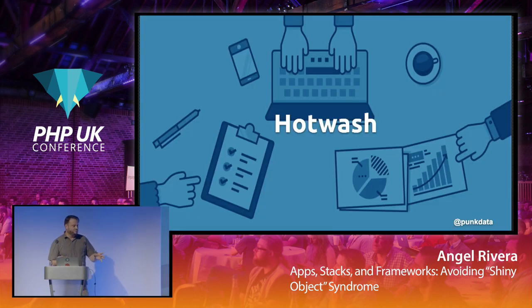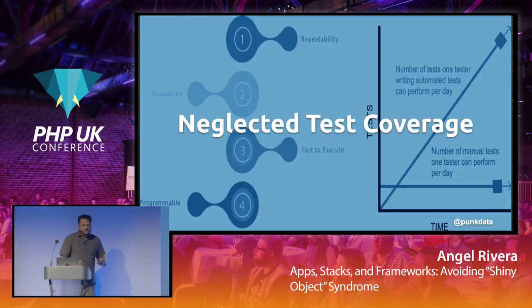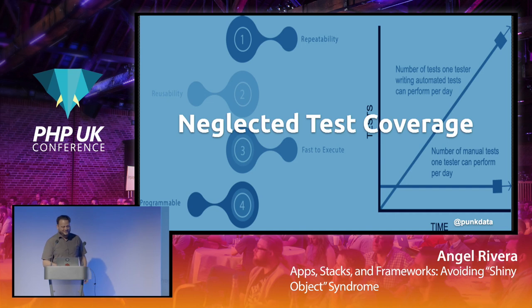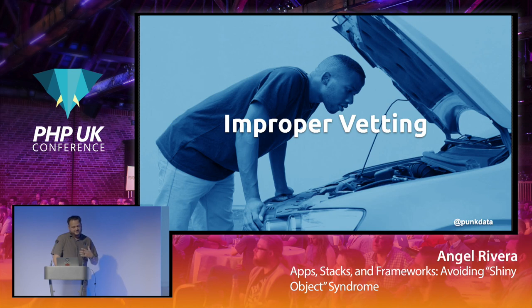Everybody familiar with the term hot wash or post-mortem? Like I said, we were professionals. We conducted a post-mortem analyzing what happened and came up with ways to prevent it from happening again. Obviously bad programming queries — but one thing we discovered was we were so confident that we neglected any kind of testing. It worked on our local machines, but when you start adding volume and you don't do any load testing, it fails. We didn't do any load testing. We also didn't properly vet the technology — we didn't understand MongoDB's capabilities, how to manage and configure it, and our data schemas were totally off.